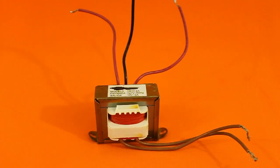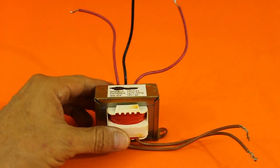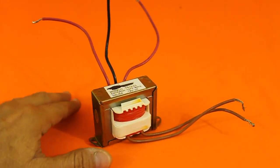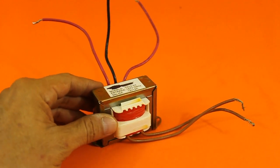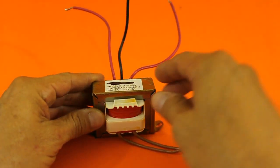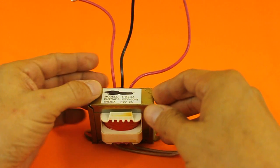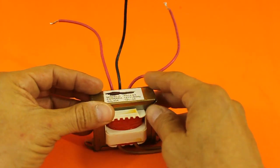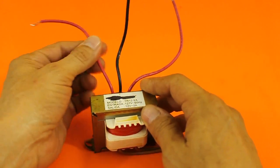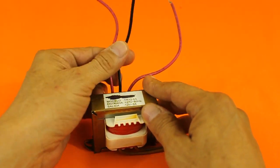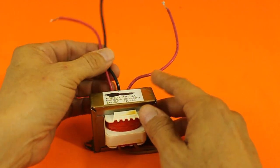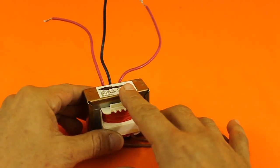We also need a common transformer of 120 to 6 volts or 240 to 12 volts. Mine is 120 to 12 volts between the red wires but it gives 6 volts between the black and the red wire so I am going to use these two as secondary. You need a transformer of one or two amps.